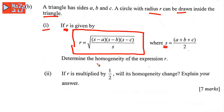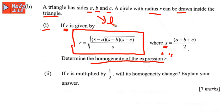The question asks us to find the dimensional homogeneity of the expression for r. From the information given, sides a, b, and c refer to lengths, so the dimension for length is L. The radius r is also a length, so the dimension for r is also L.